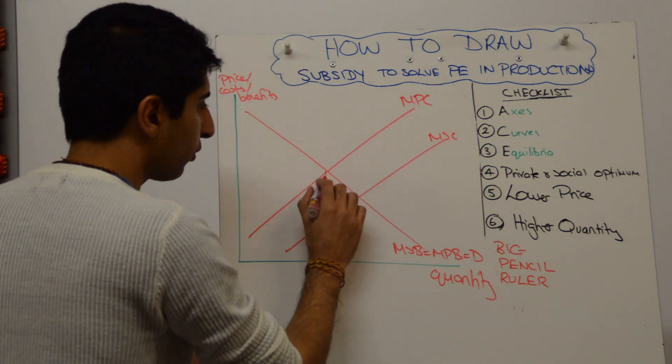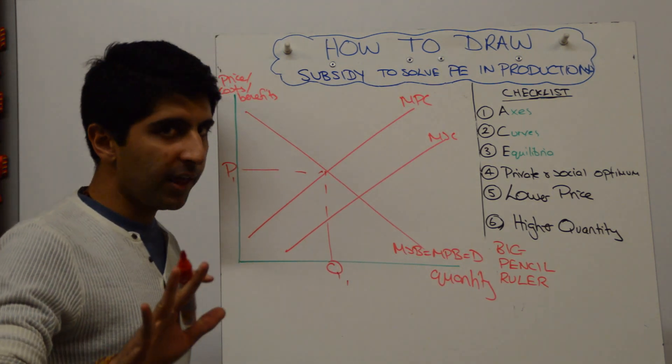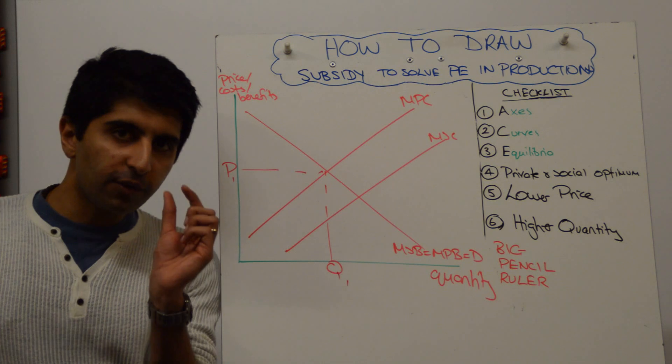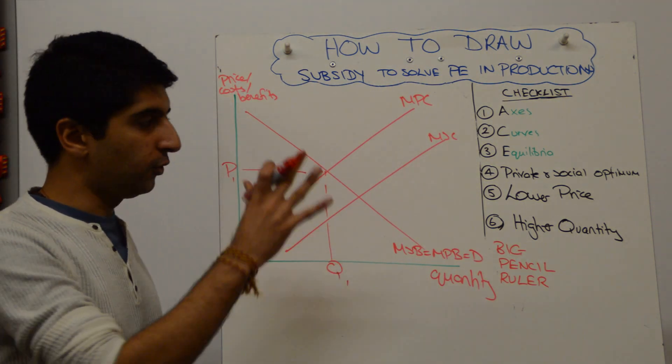We want to show the private optimum, that's Q1 and P1. We can leave that one there for now. Now we want to show the impact of the subsidy. So draw that, practice doing that to start with.